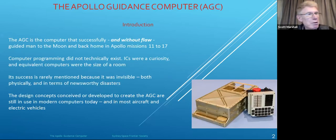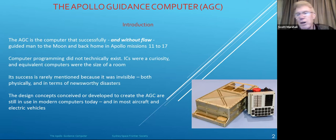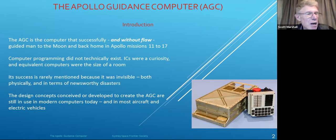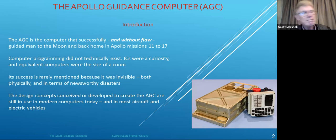The Apollo Guidance Computer, or AGC, took man from Earth orbit to the lunar landing and back to Earth. It operated flawlessly. It was designed and built when computer programming did not technically exist, integrated circuits were a side curiosity, and equivalent computers were the size of a room. The AGC had to be smaller than one cubic foot, operate within extremely limited memory, and make complex orbital computations in an environment where circuitry had never been asked to operate. All designed, built, programmed, tested and delivered within five years. The AGC was ahead of its time.